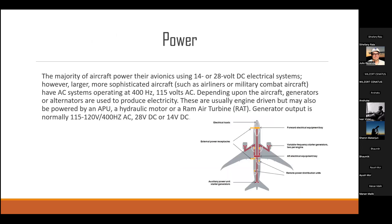The last topic is the power system of the aircraft. The majority of aircraft power their avionics using 14- or 28-volt DC systems. The APU is one of the major power sources in the aircraft, working on 115 volts AC at 400 Hz, depending upon the aircraft generators and alternators used to provide electricity. The RAM air turbine is also used in the aircraft for generating power, normally around 115 to 120 volts AC or 14 volts DC.